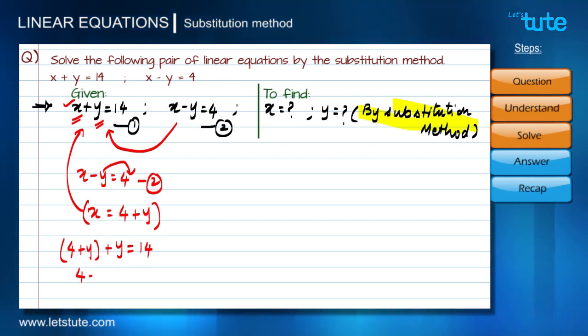Therefore the two y's are added to give 2y, and the equation becomes 4+2y=14. Let's transfer this 4 to the right-hand side so that 2y becomes 14-4.